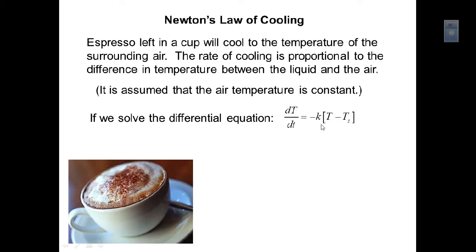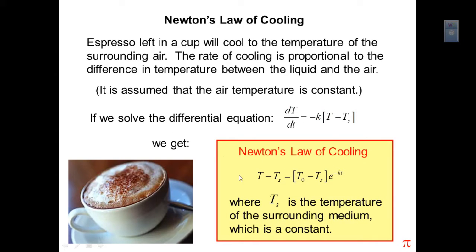From Newton's Law of Cooling, the change in temperature with respect to time equals negative k times (T minus Ts), where Ts is the surrounding temperature and T is the temperature of the object at that time. Solving this differential equation gives: T minus Ts equals (T₀ minus Ts) times e to the negative kt. Here Ts is assumed to be constant — this doesn't account for wind or rapidly changing conditions, but it's a basic, controlled model.